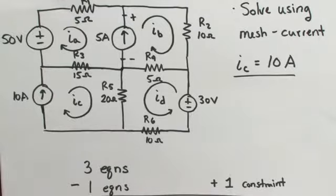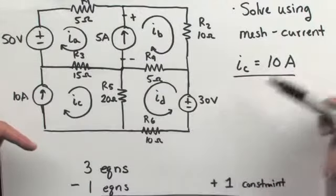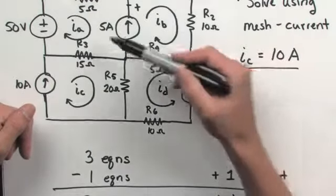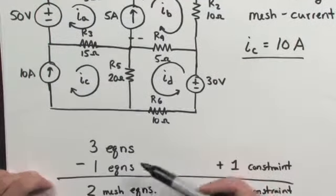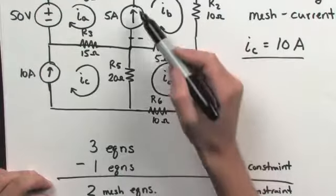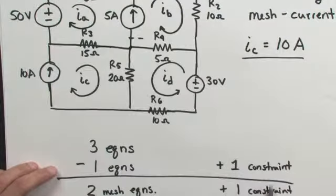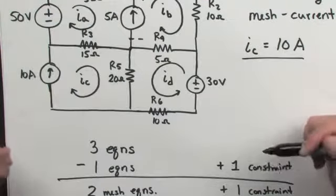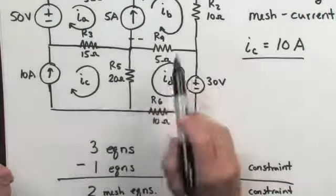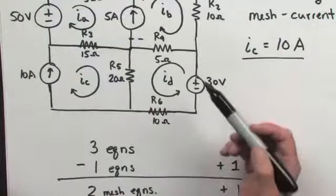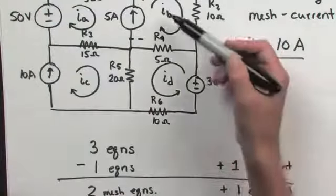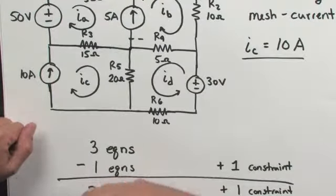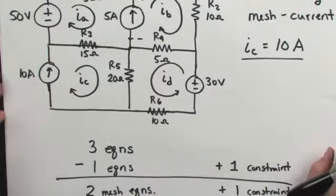In conclusion, we've solved this circuit completely using the mesh current method. We identified the meshes of the circuit, recognized the special case requiring two meshes to be combined into a super mesh, and added a constraint equation. This gave us three independent equations to solve for all unknown currents. Now that we know all the currents, we can use them to determine the potential drops across every resistor everywhere in the circuit.